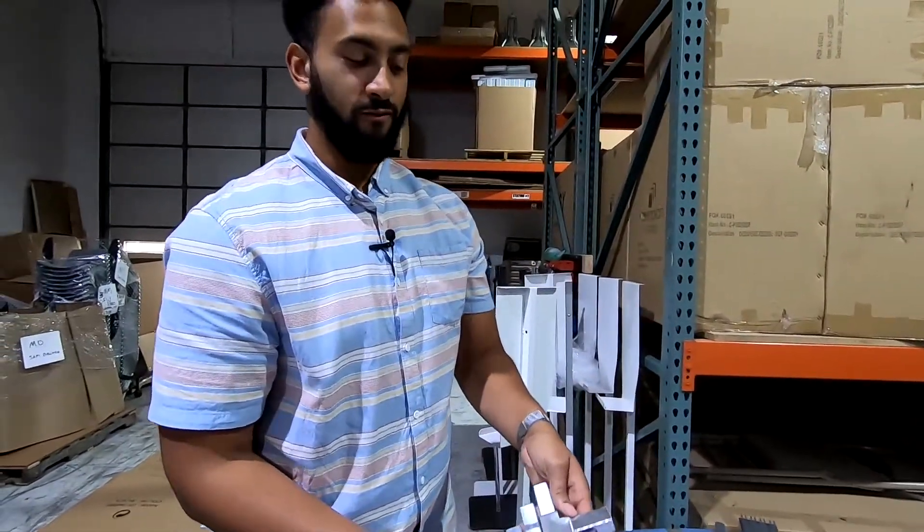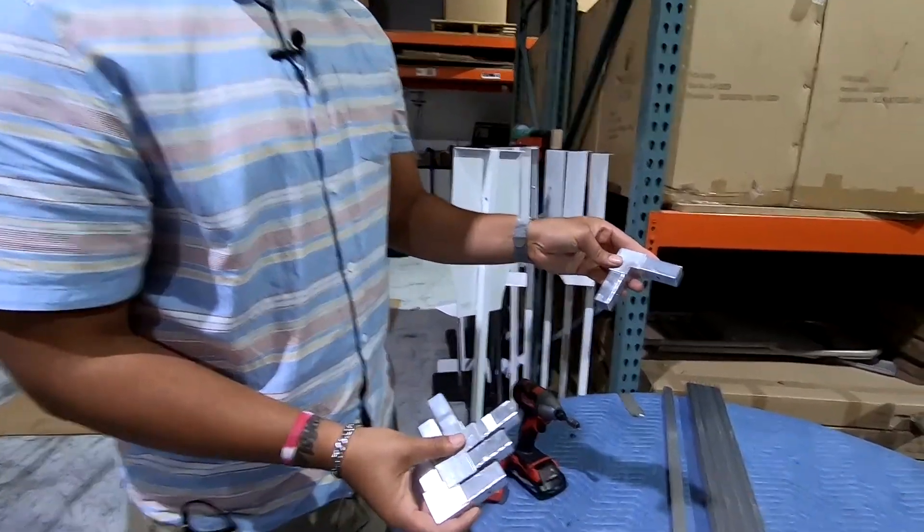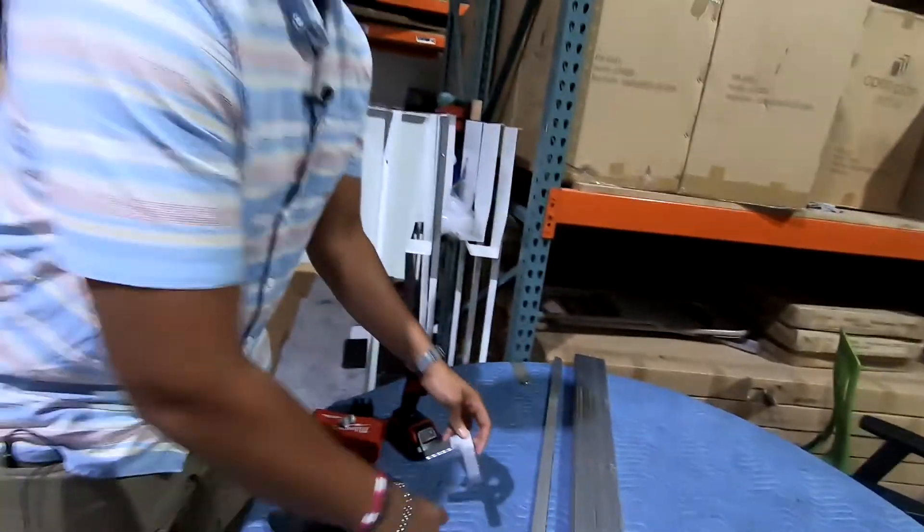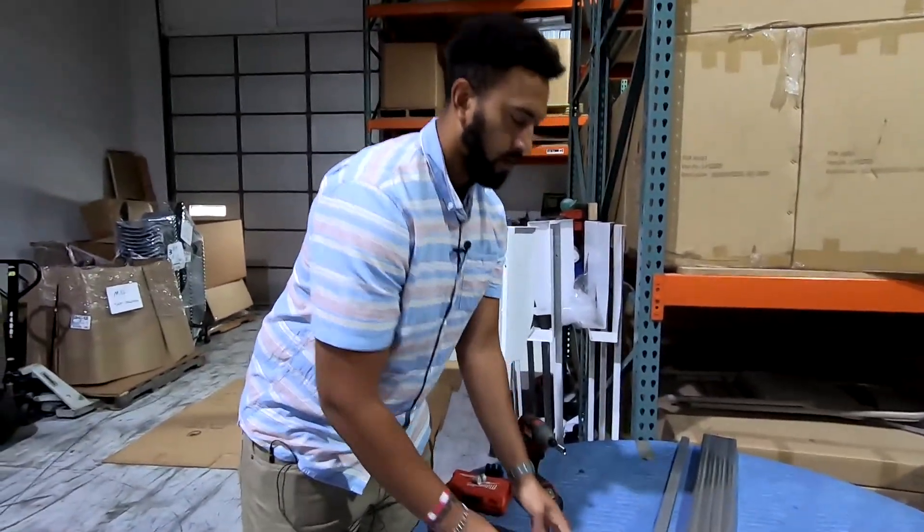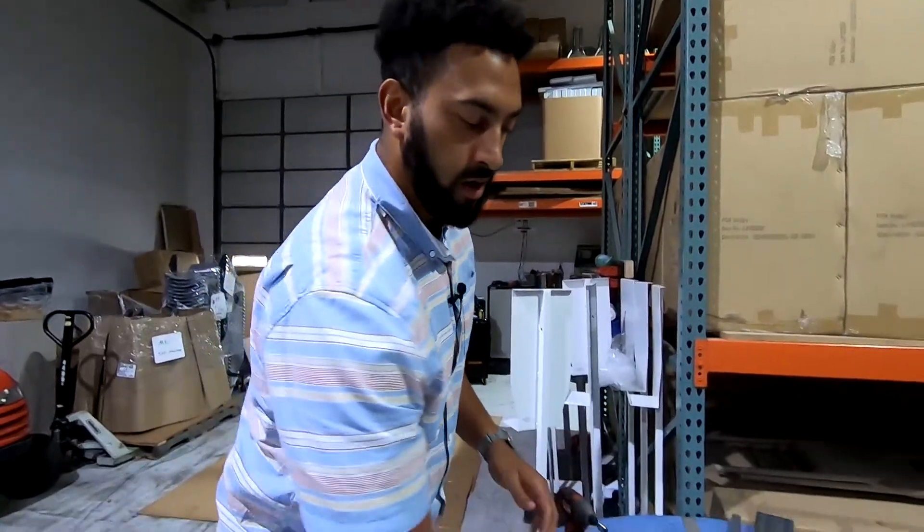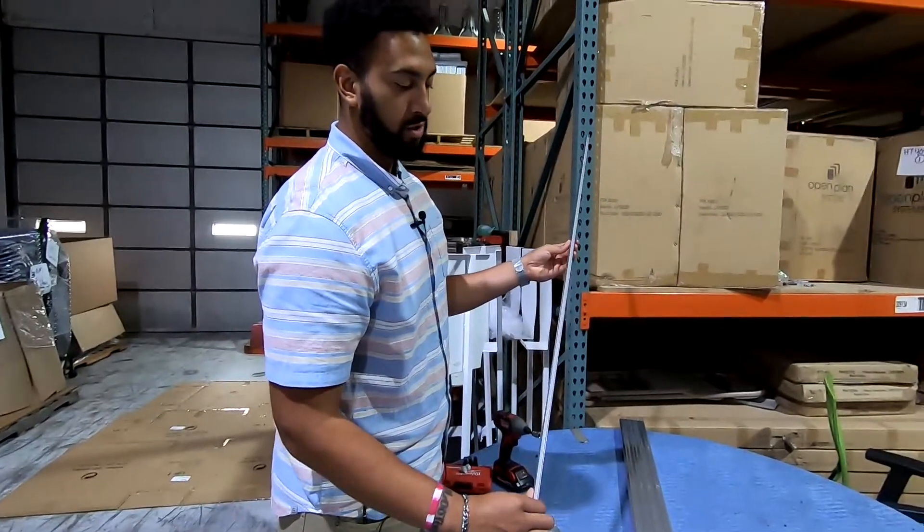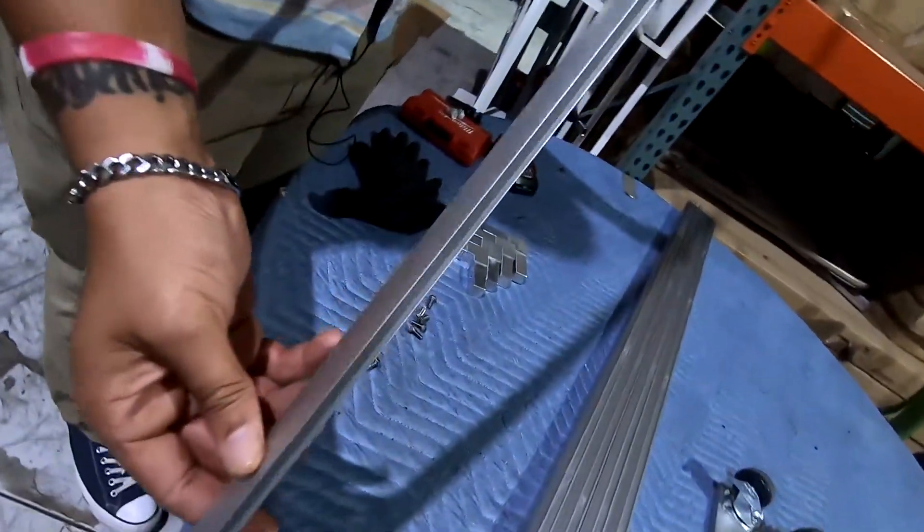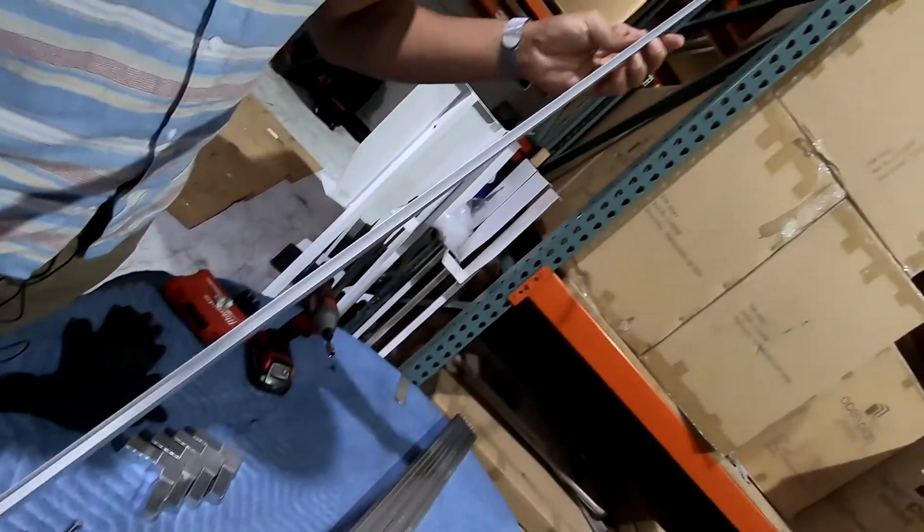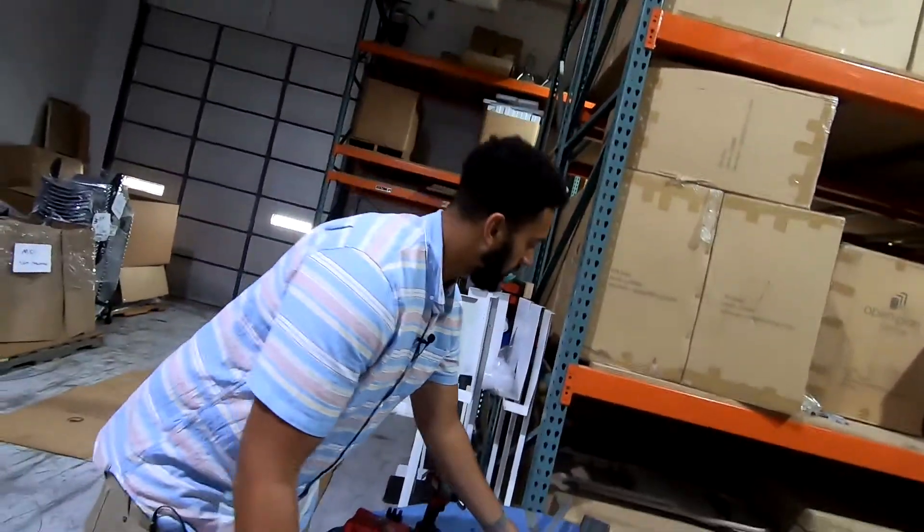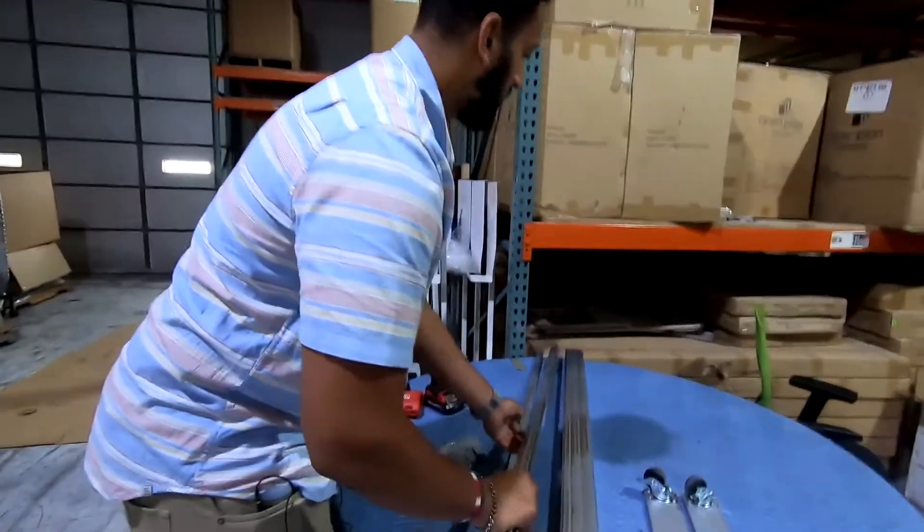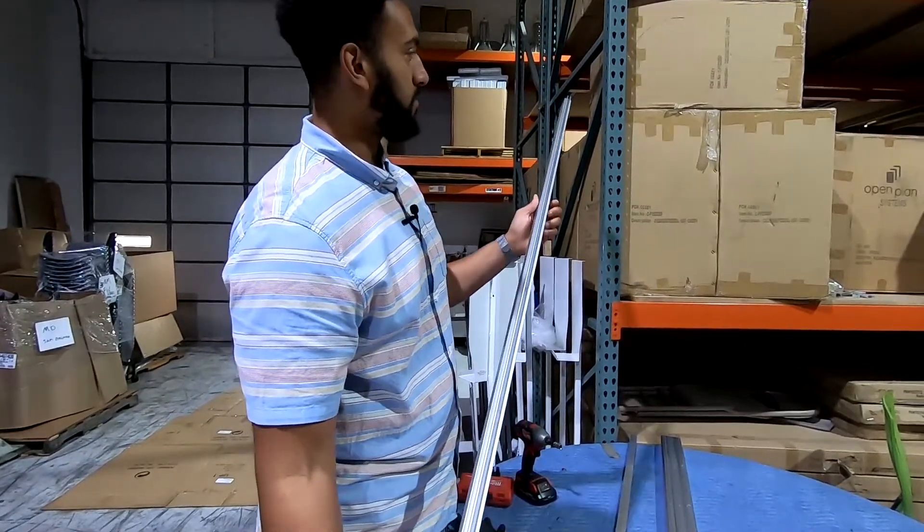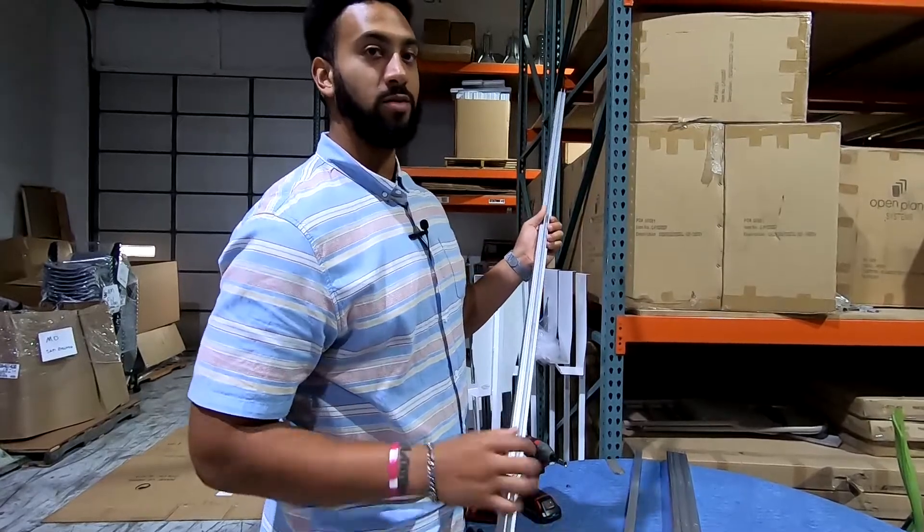You will get four 90-degree angle brackets. Depending on size, you may or may not get an H-channel to hold the glass together. Again, depending on size, you will get the right measured amount bracket to hold the glass in place.